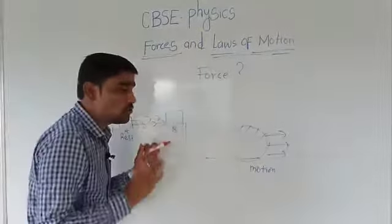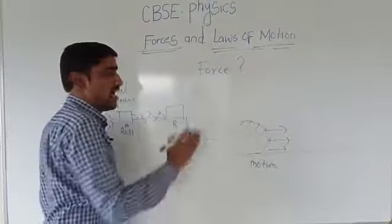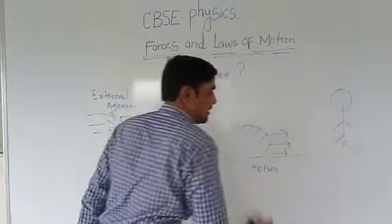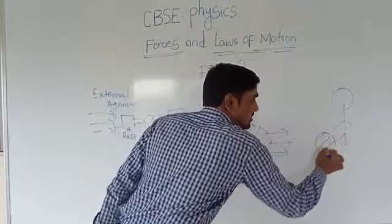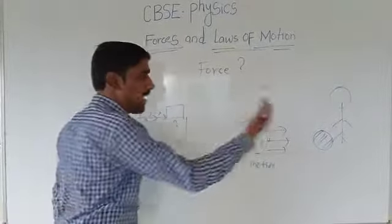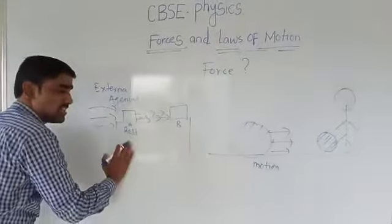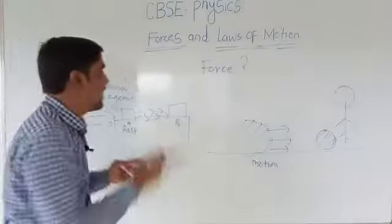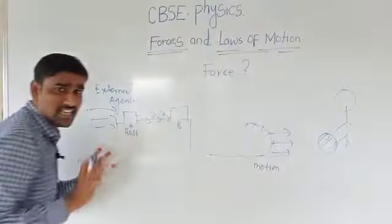If we want to stop the motion of this body, we have to again apply some external agency. Suppose the body is standing here, and when it comes near to the other body, then that body stops it by pressing the foot on the body. What happens here? The body in motion comes to rest, and the body at rest comes into motion — because of an external agency. And that external agency is nothing but the force.